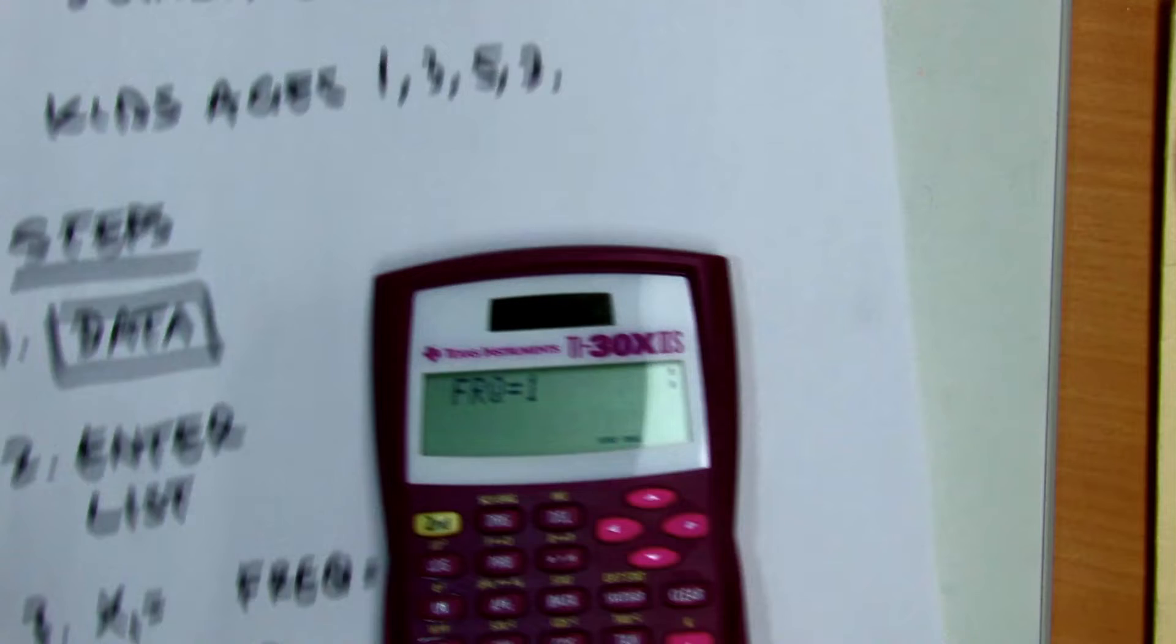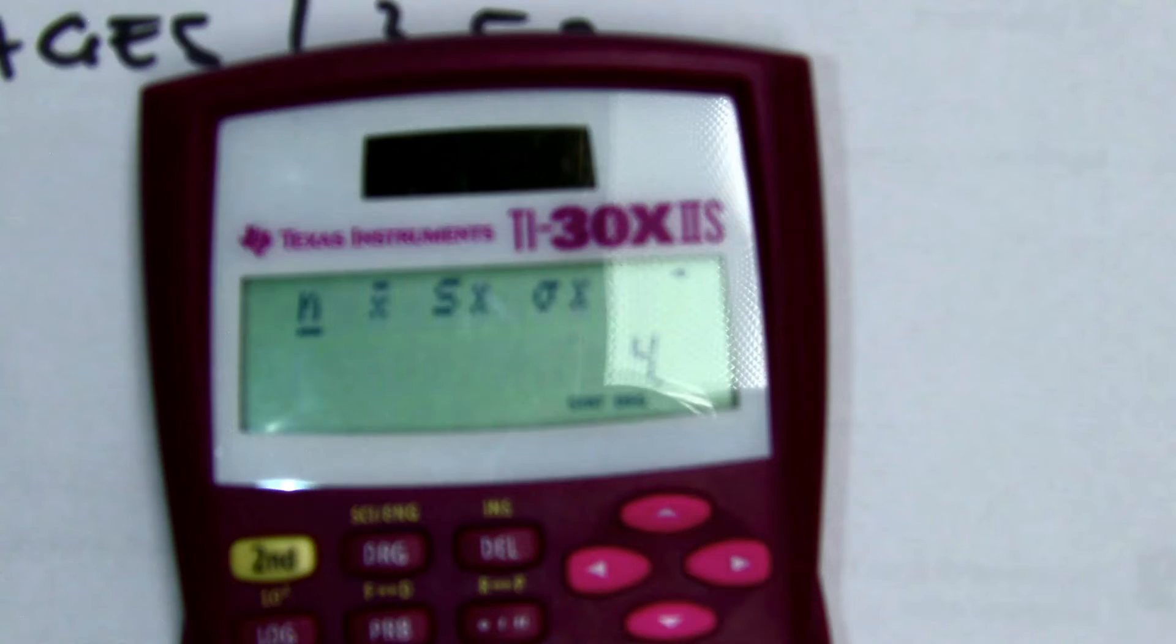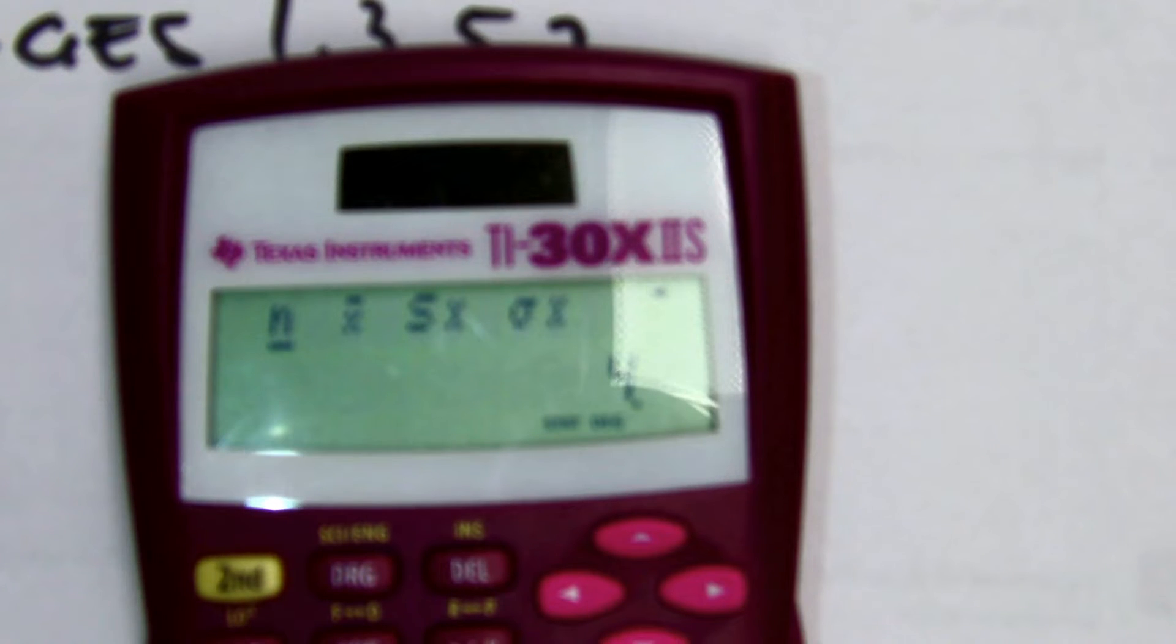And then when you have all the numbers in the list, you're going to press that bar. And when you do that, it's going to give you a couple of options here.